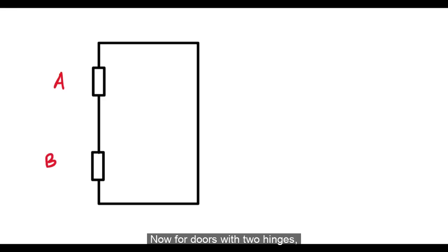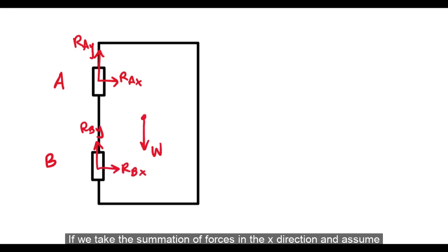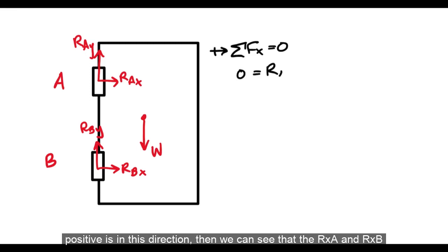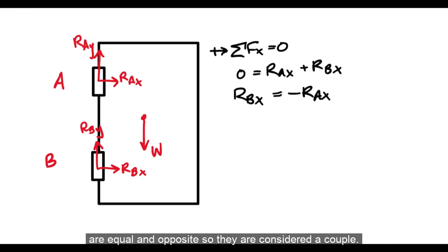Now, for doors with two hinges, these will be the reaction forces for the hinges. If we take the summation of forces in the x direction and assume positive is in this direction, then we can see that the RxA and RxB are equal and opposite, so they are considered a couple.